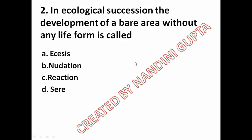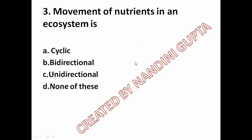Movement of nutrients in an ecosystem is option A cyclic, option B bidirectional, option C unidirectional, option D none of these. The correct answer is cyclic. The nutrient cycle represents cyclic movement within the ecosystem, so option A is correct.